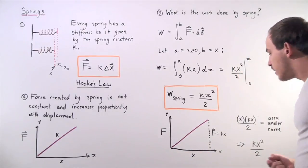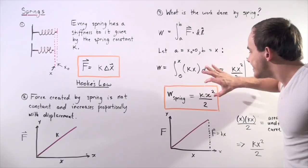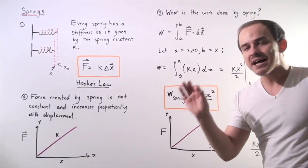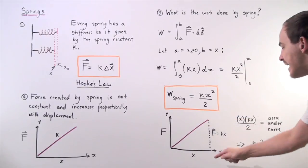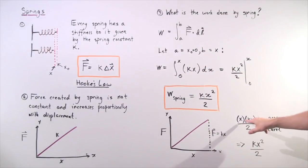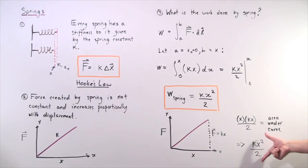we can take the base, multiply by the height, divide by 2, and we should get exactly this value, and that's exactly what we get. So our base is x, our height, the force, is k times x, and we divide that by 2, and this gives us the area underneath our triangular curve. And that gives us this, which is identical to this.